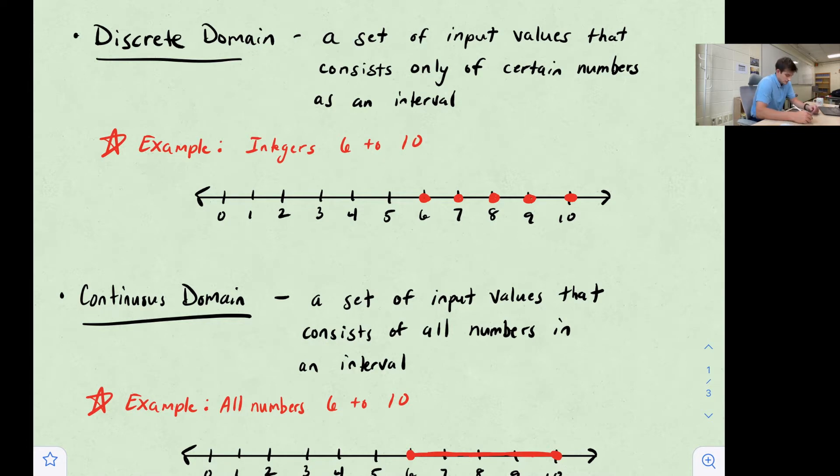We'll start with discrete. Discrete domain is just a set of input values that consists only of certain numbers in an interval. So our example here would just be the integers 6 to 10. So integers, we just have 6, 7, 8, 9, 10, no decimals or fractions in between those whole numbers. So on a graph, we just represent them as single points. We don't shade in between or anything like that.